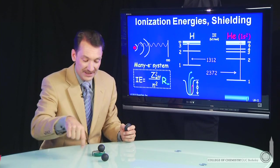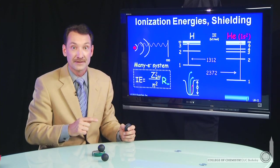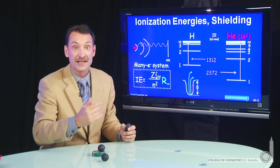because the s electrons have access to the nucleus. There's no nodes in an s orbital at the nucleus. But the p electrons do have a node at the nucleus, an angular node.